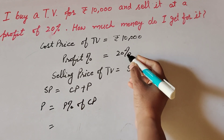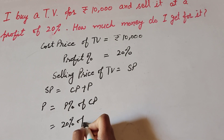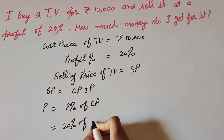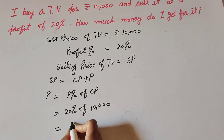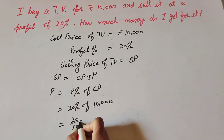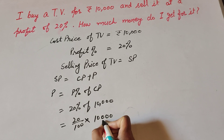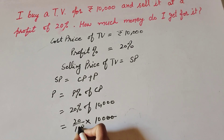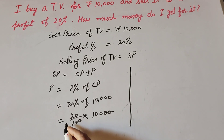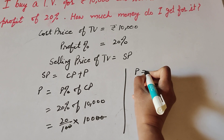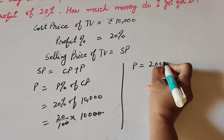Profit percentage is equal to 20 percent of cost price, which is 10,000. So 20 percent means 20 over 100, multiplied by 10,000. The 20s in the numerator and denominator cancel, and we get profit is equal to 20 multiplied by 100, which is equal to 2,000.